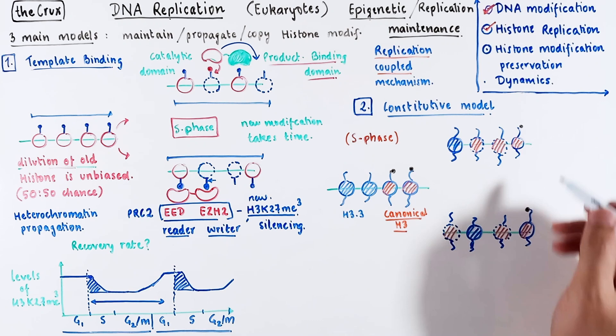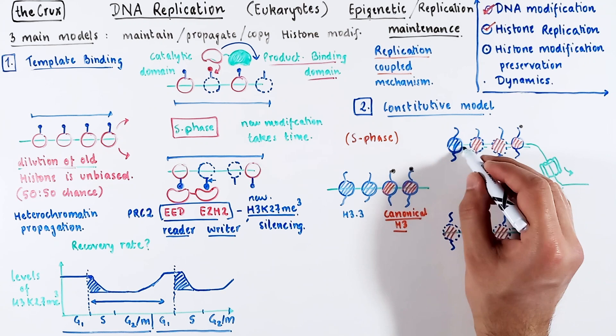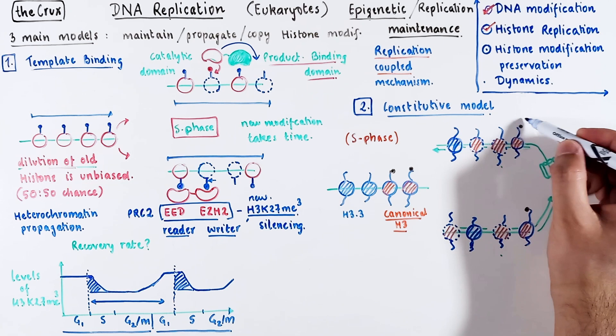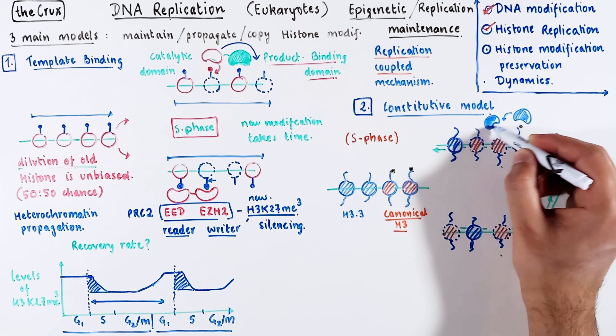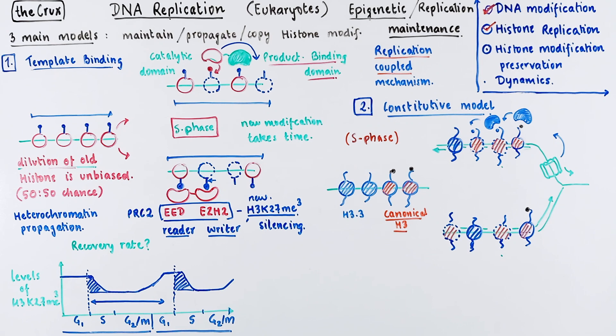Since this is a replication coupled mechanism, here is a dummy picture that it occurs in proximity to a moving replication fork. The moving replication fork, according to this model, can recruit proteins that recognize the old canonical H3 histones and modify the adjacent newly incorporated histones. And this sequence of modification can continue along the locus. However, it cannot modify histone H3.3.